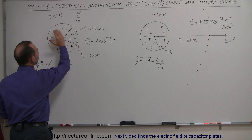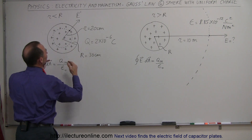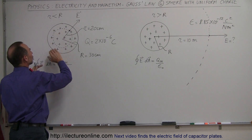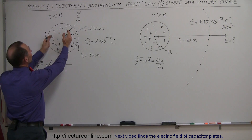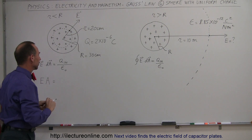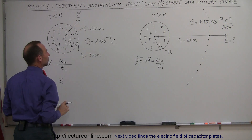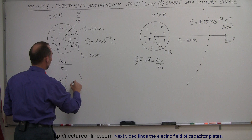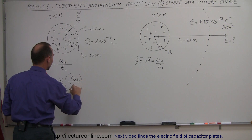How much charge is inside the Gaussian surface? We were given the charge inside the whole sphere, so we have to find the ratio of how much is inside the Gaussian surface compared to inside the whole sphere. That ratio will simply be the ratio of the volume of the Gaussian surface divided by the volume of the whole sphere, times the total charge Q — 2 times 10 to the minus 6 Coulombs.